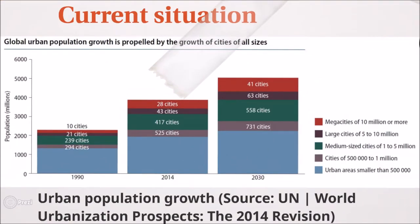As of 2015, it was reported that over 880 million urban residents are still estimated to live in slum conditions, compared to 792 million reported in 2000. As shown in the graph here, the global urban population growth is propelled by the growth of cities of all sizes. It is projected that the world's urban population would increase from the current 54% to 66% by 2050, adding another 2.5 billion people to urban populations.